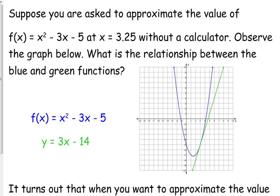So I have the function x squared minus 3x minus 5 graphed there in blue, and then I have an additional line, y equals 3x minus 14, that is also graphed. What seems to be the relationship between those two functions? The green one is the tangent line at x equals 3.